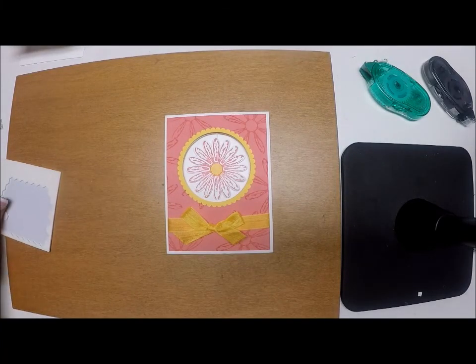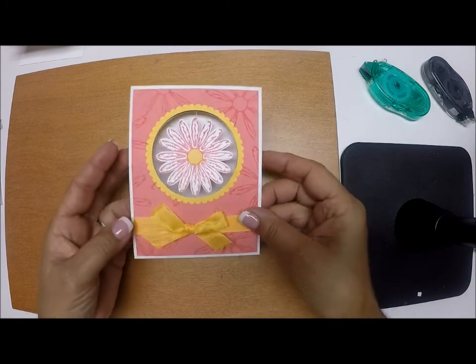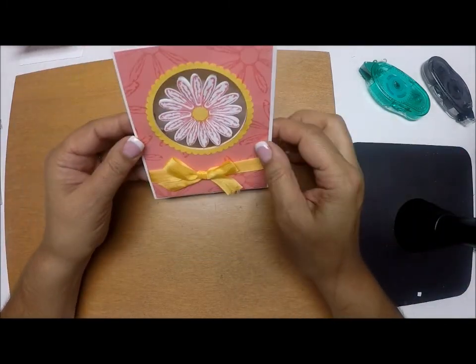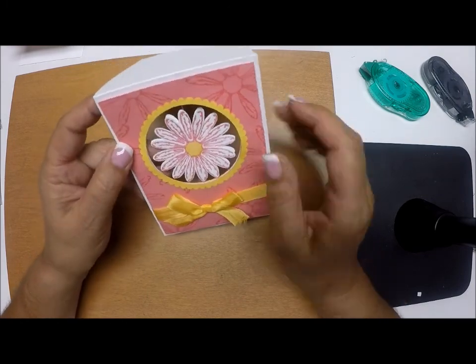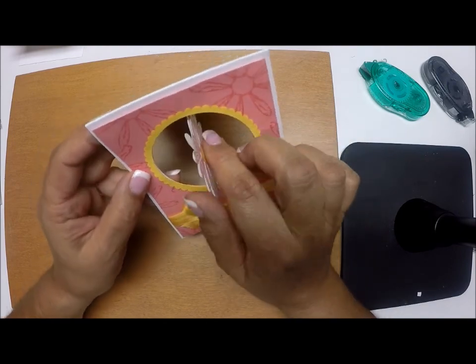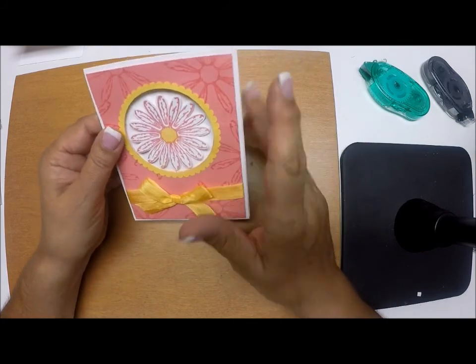Hi everyone and welcome back to Stamp with Anna. Today we're going to make this window card featuring the new Daisy Punch and Stamp from the Stampin' Up 2017-2018 Annual Catalog. You can see this is a regular window card, but this time the daisy can spin around and it looks like it's kind of floating. And I just love that look.